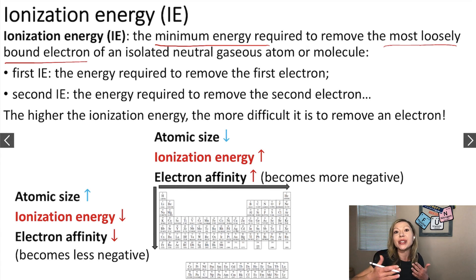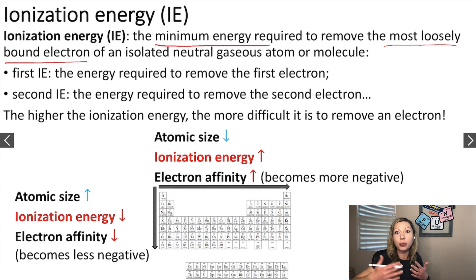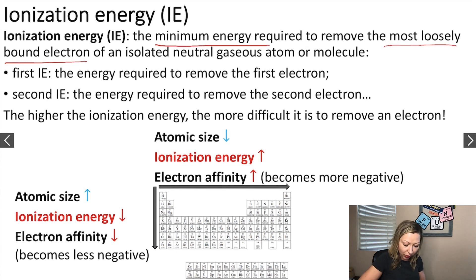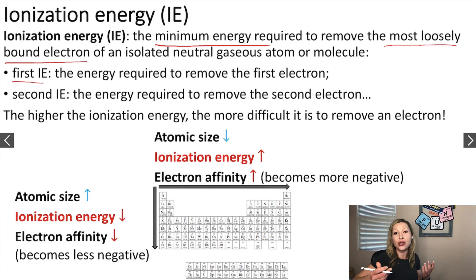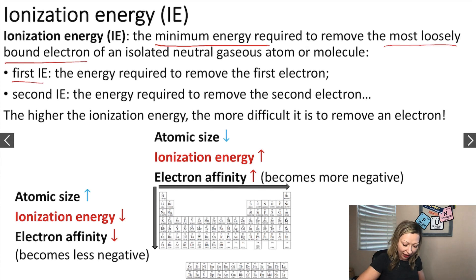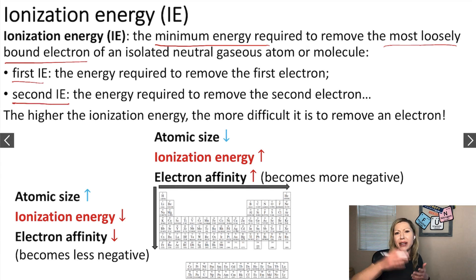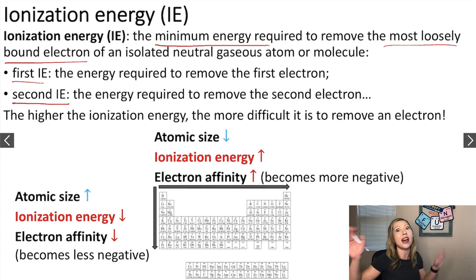We can have successive ionization energies. So we can remove the first electron — this is going to be called the first ionization energy. When you are removing a second electron, this is called the second ionization energy. We can have a third, fourth, and so forth ionization energies.